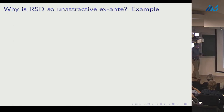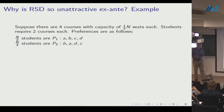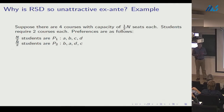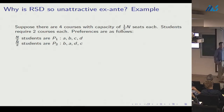So what went wrong with the random serial dictatorship? Consider a simple example — a multi-unit demand version of the Bogomolnaya-Moulin probabilistic serial example. Suppose there are four courses each with capacity for half the population, students require two courses each, and half the students are P1 types (preferring A then B then C then D) while half are P2 types (preferring B then A then D then C).